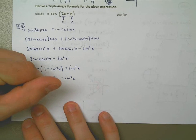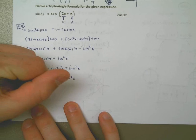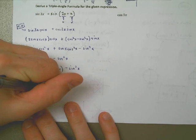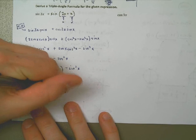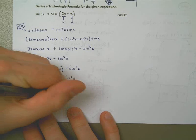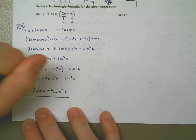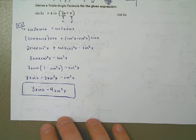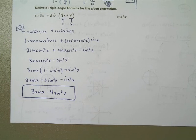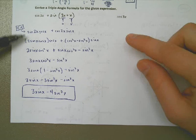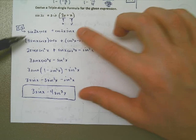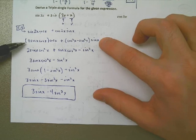And that's about as simple as it's going to get. At any point in time you could have stopped and said this is going to be the sine of 3x — it doesn't really matter where you stop. But this is about as simple as we can make it, which is why it's the most convenient. This would be the formula we'd probably want to use.